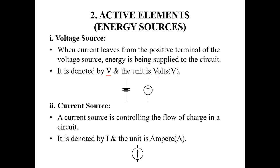A current source controls the flow of electric charge in a circuit. It is denoted by capital I, and its unit is ampere, capital A. The arrow in the symbol represents the current source and its direction.